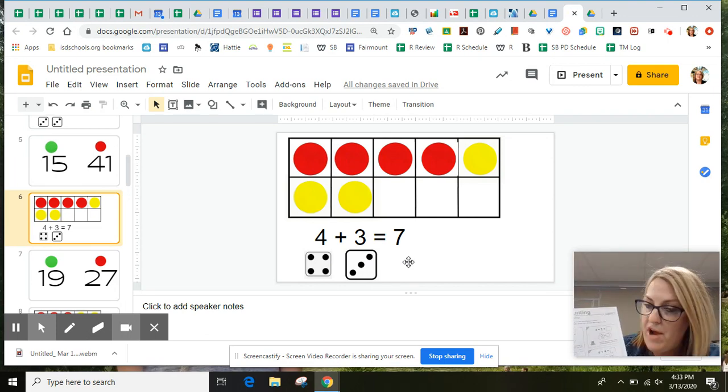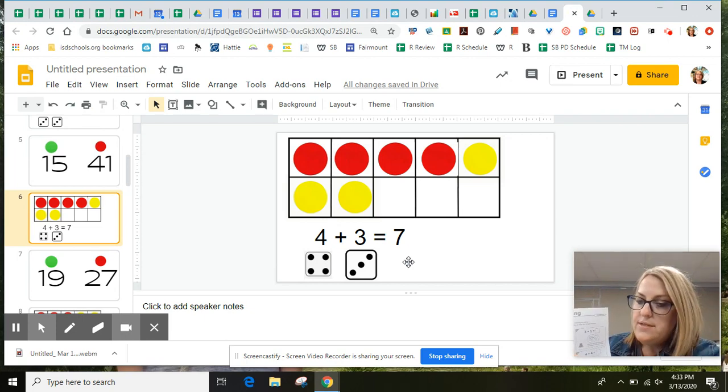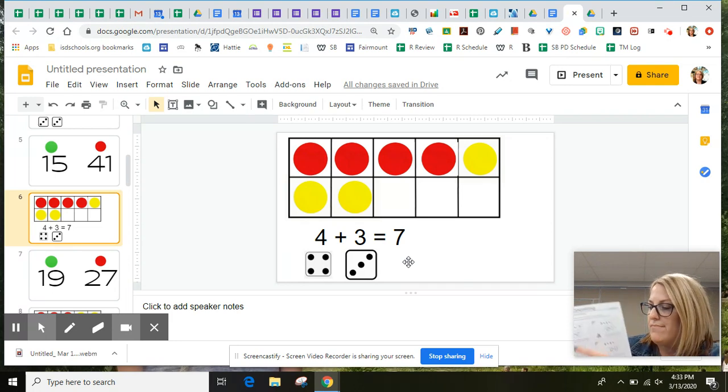When you go to practice, the very first one on your page says, four and three is the same as seven. Your next one says, five and one is the same as, hmm. Remember, you can check what the frog is thinking and count the dots on the number cubes to figure out how many is five and one. Have fun practicing, and I'll see you again tomorrow.